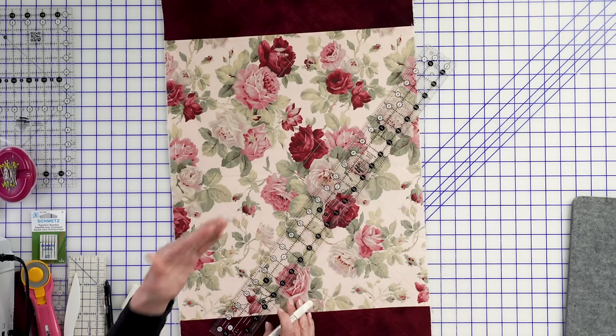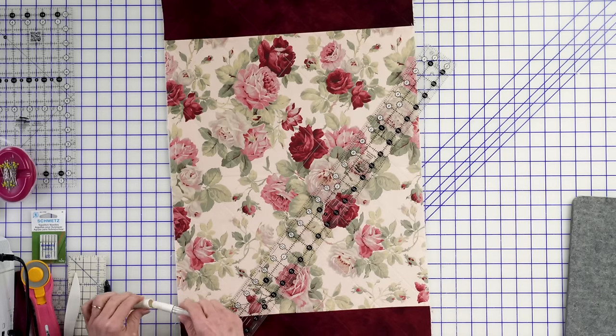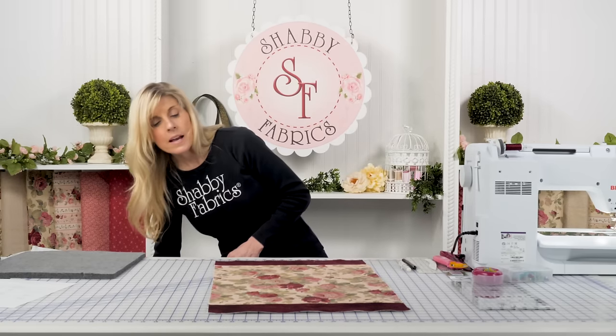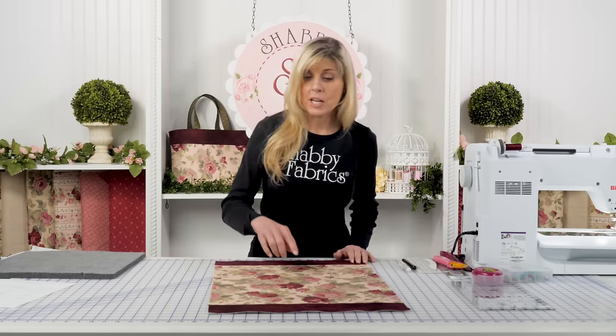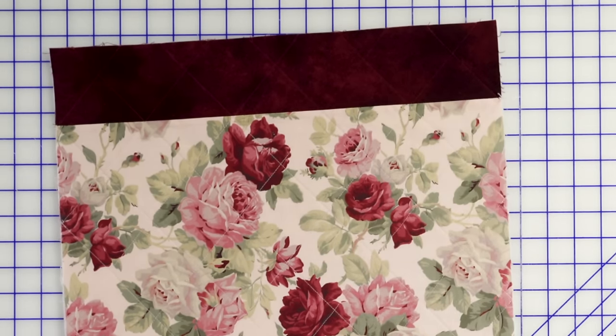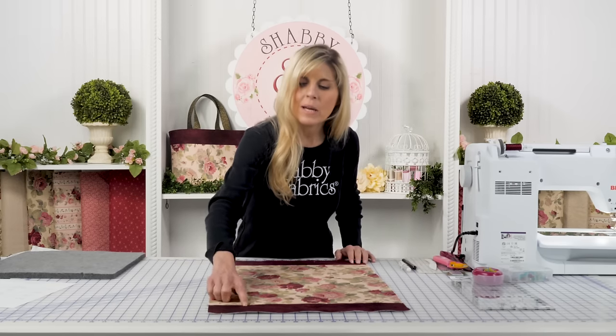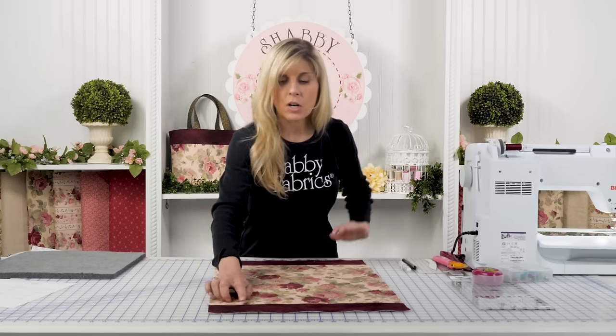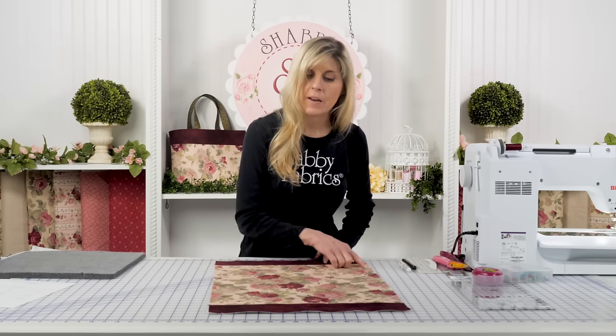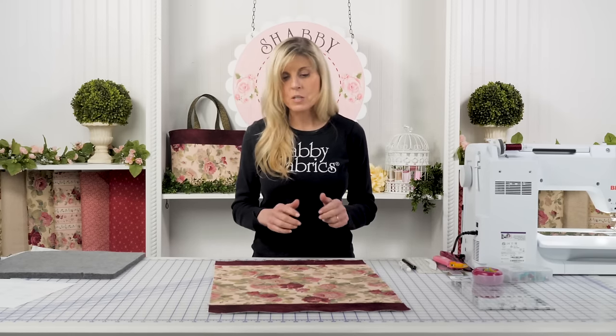And then you just sew straight lines. Now what we did do, if you decide to use the same fabrics, is we did make a thread change. Because if you want to really have your thread not showing, we did a beautiful dark red here, almost a burgundy, almost a wine, and a light pink in here. So your choice what you want to do with that.